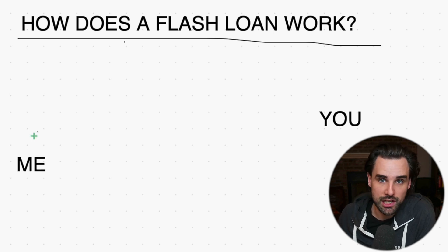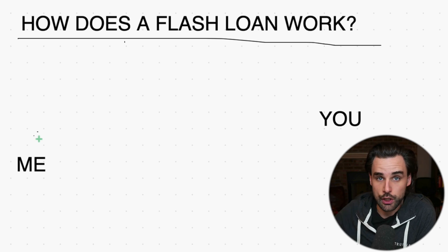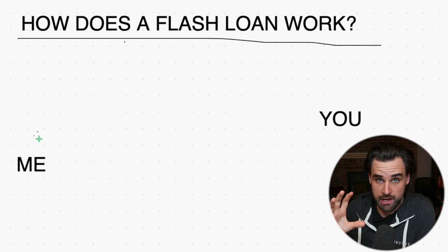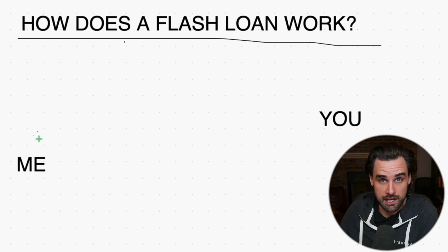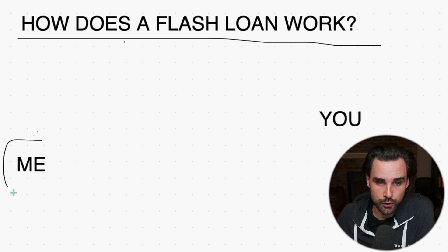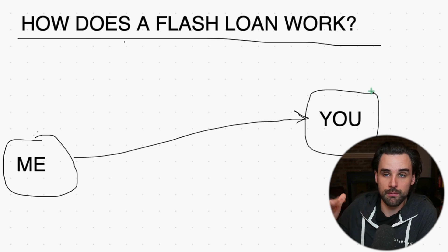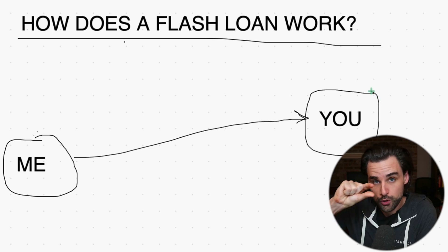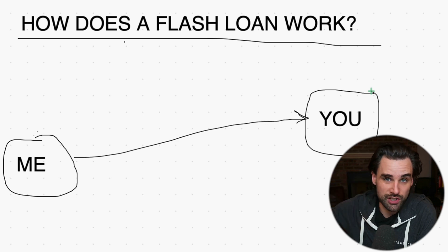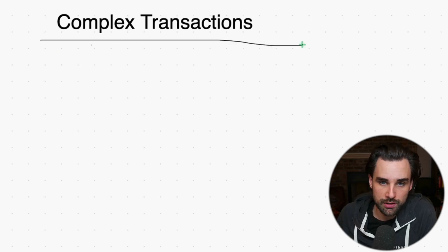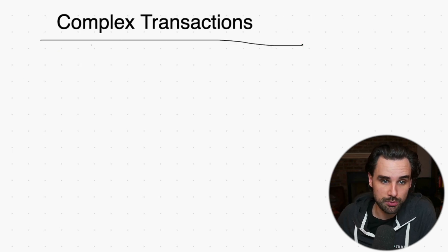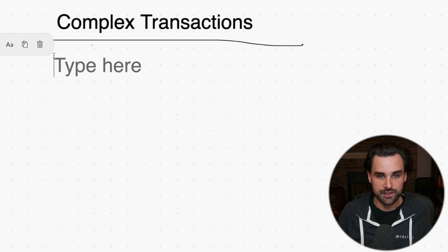Let's think about the simplest blockchain transaction you can think of, which is just sending cryptocurrency around — Ether on the Ethereum blockchain. If I send Ether to you, that's a really simple transaction with one basic instruction: take Ether out of my account and give it to your account in a very specific amount. But the cool thing about blockchain is you can do complex transactions with multiple steps inside the transaction itself.